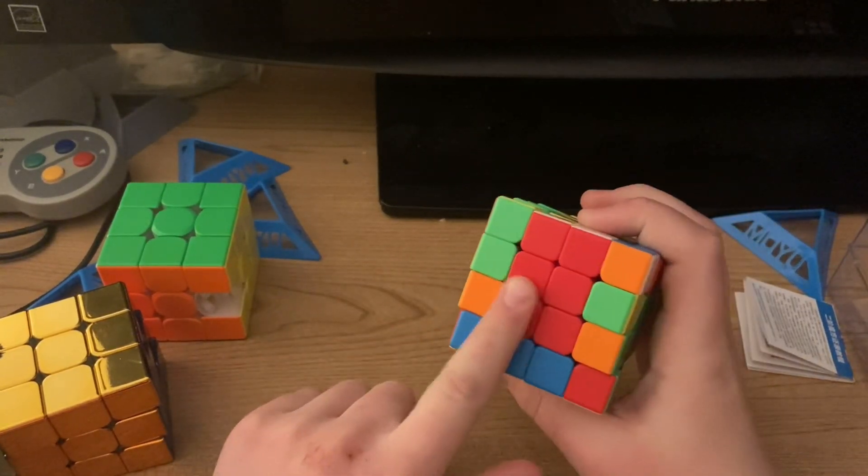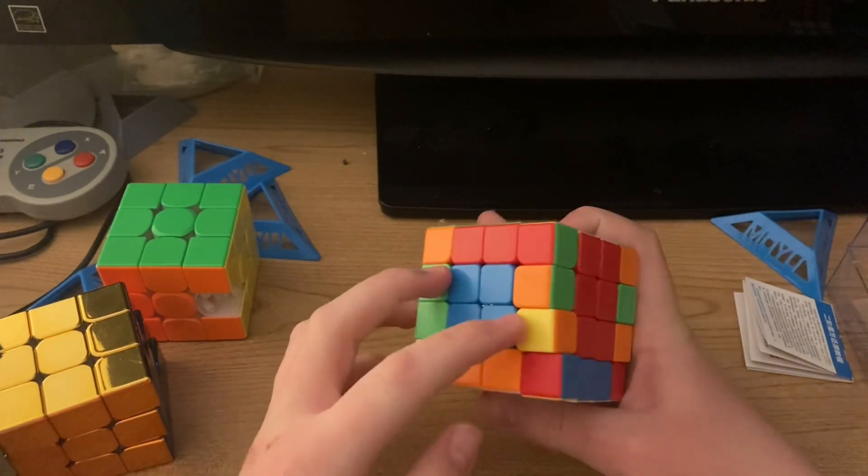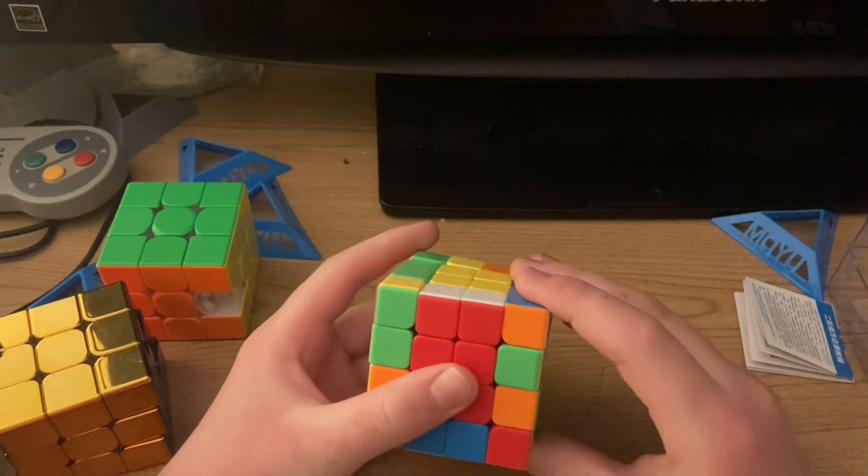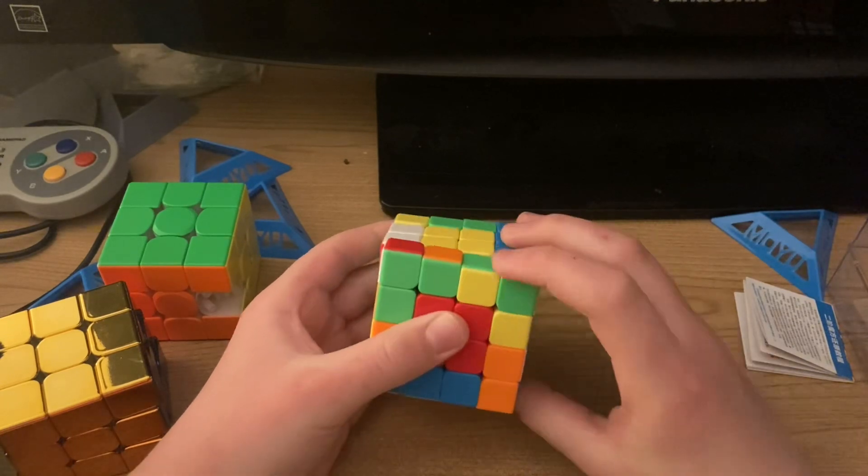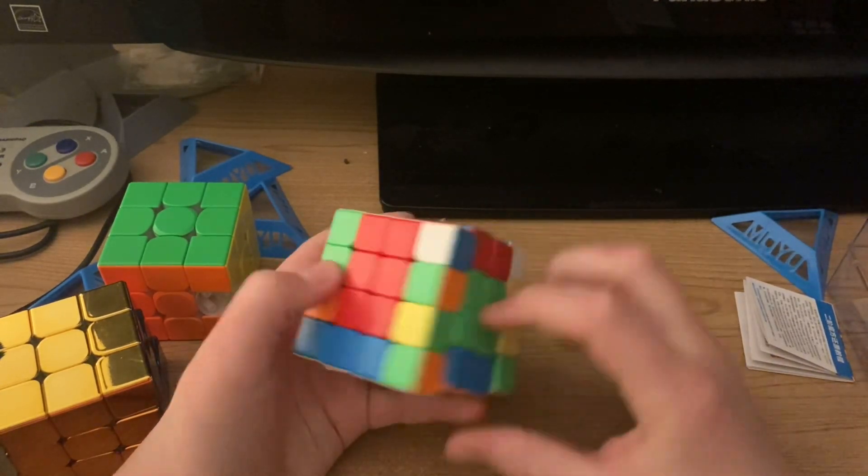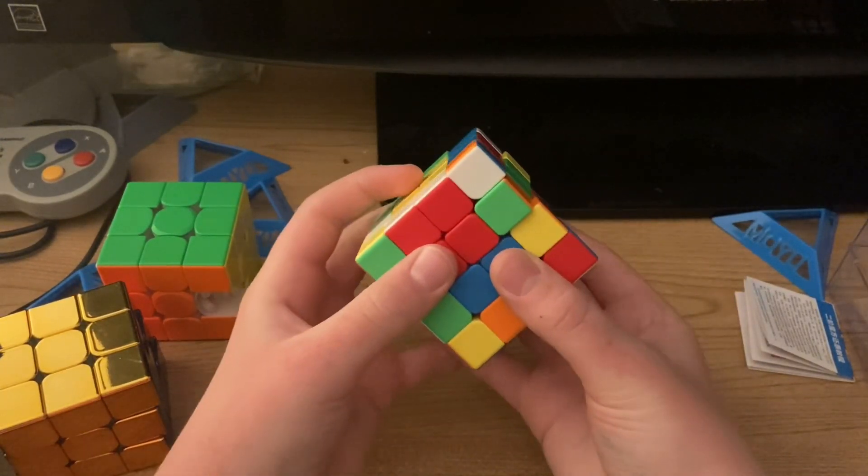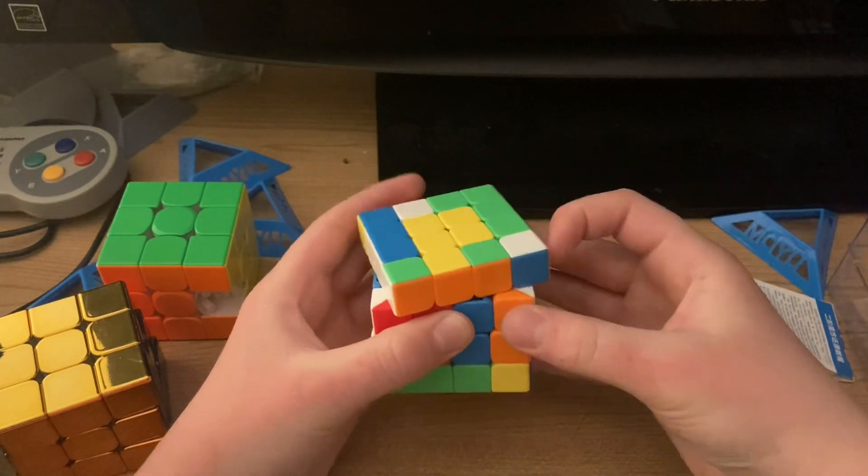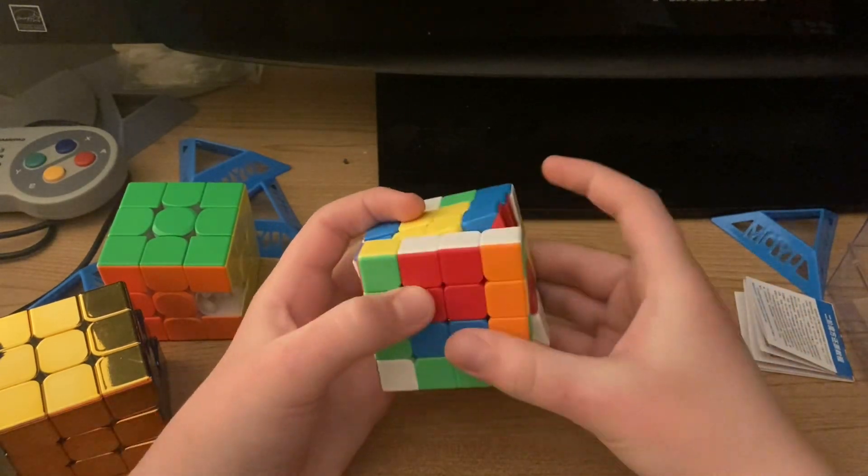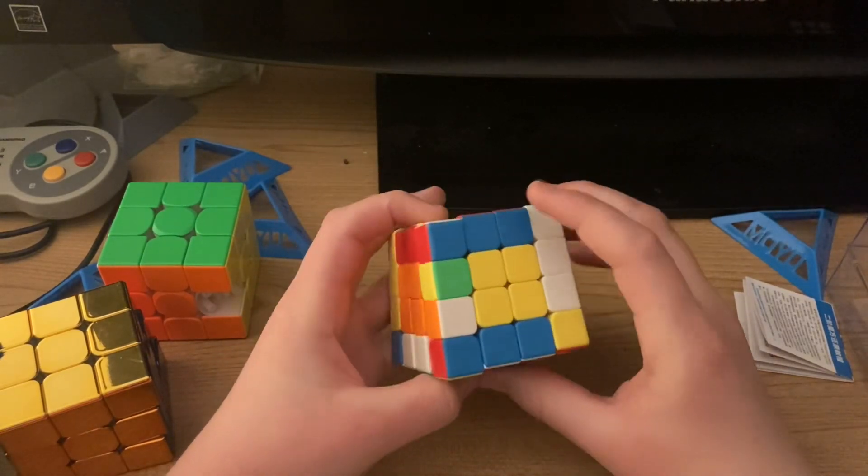Here's where we need the algorithms. There's two: if it's like this where they're diagonal, you're going to need to do this algorithm. Now they're across. We want them across, and then you're going to do this algorithm. Okay, now they're solved.